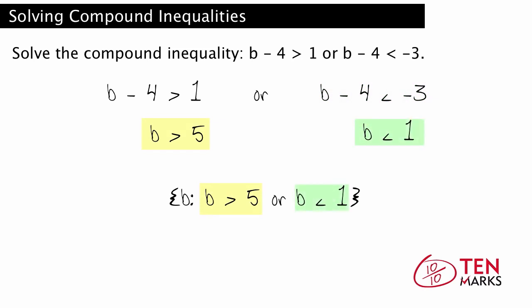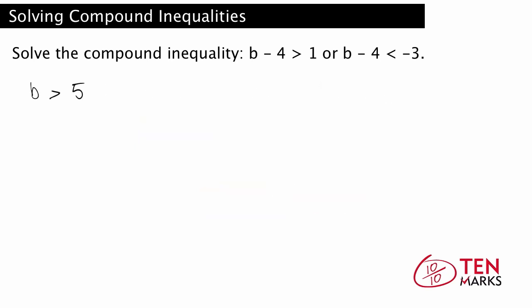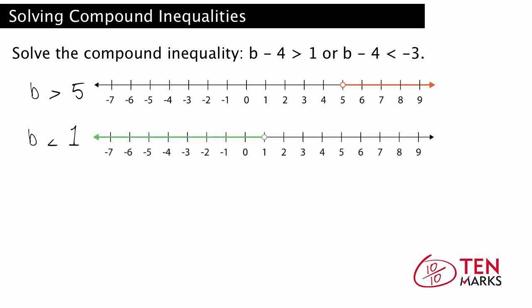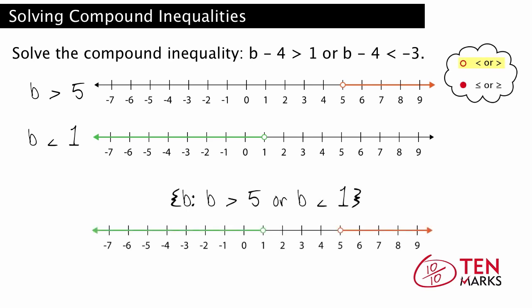To graph the solution set, you graph the simple inequalities first. This number line shows b is greater than 5, and this number line shows b is less than 1. Notice that open circles are used because b is not equal to 5 nor equal to 1. The solution is both parts of the separate graphs put together, also called the union of the two graphs.